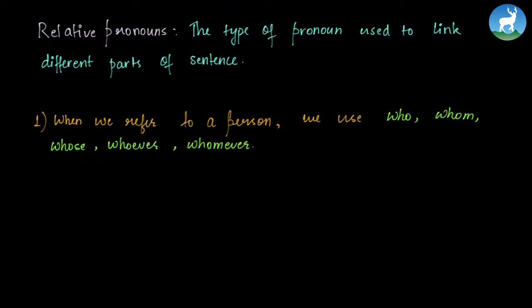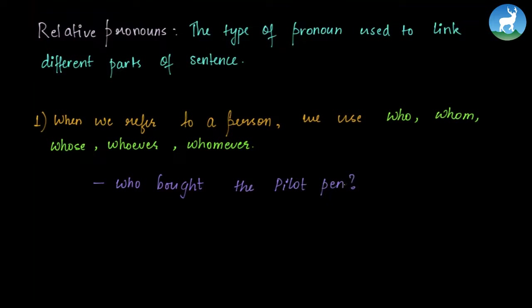We use the relative clauses who, whom, whose, whoever or whomever when we refer to a person in particular. For example: 'Who bought the pilot pen?' — we are talking about a person, so we use who in this sentence.